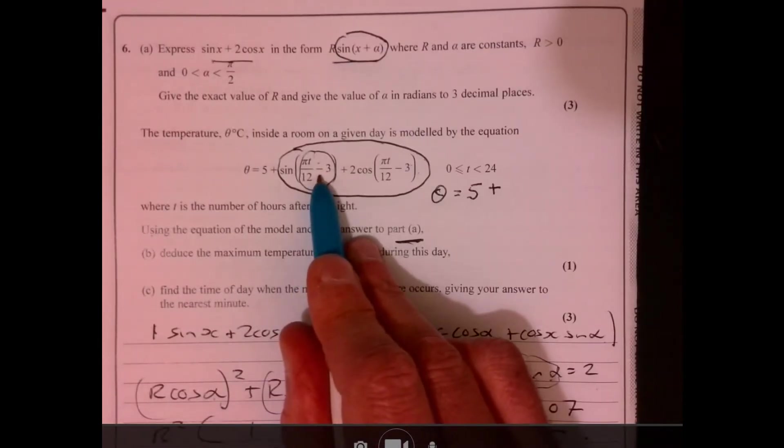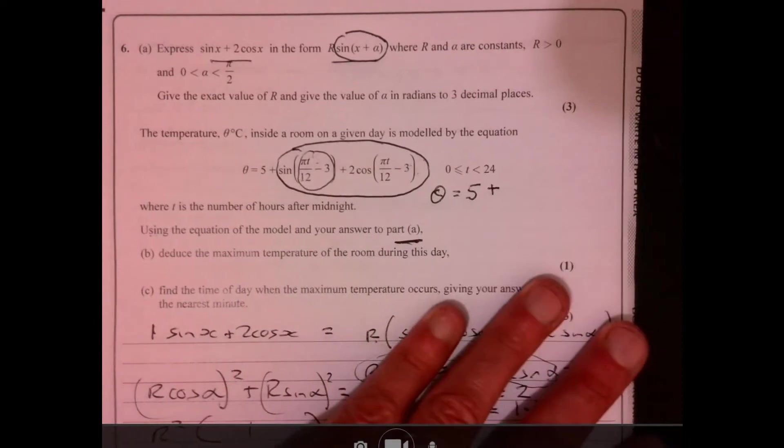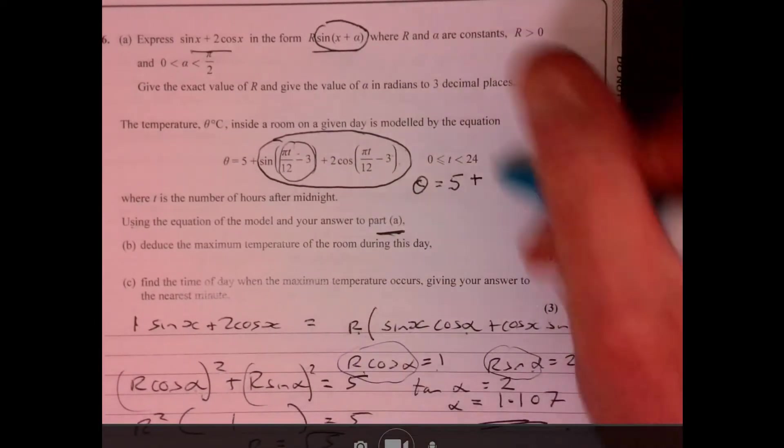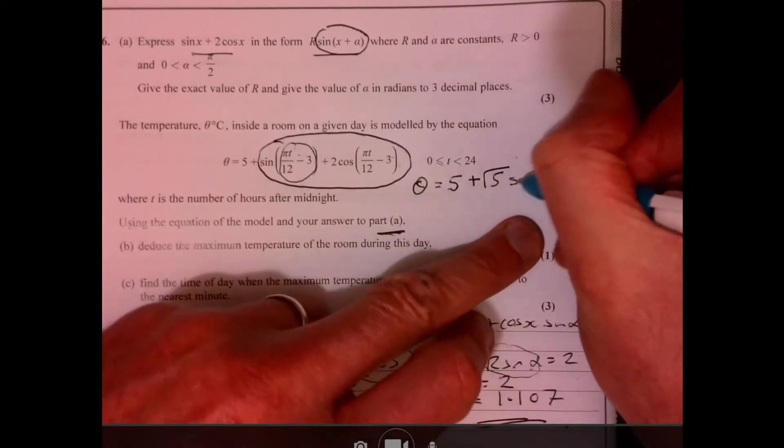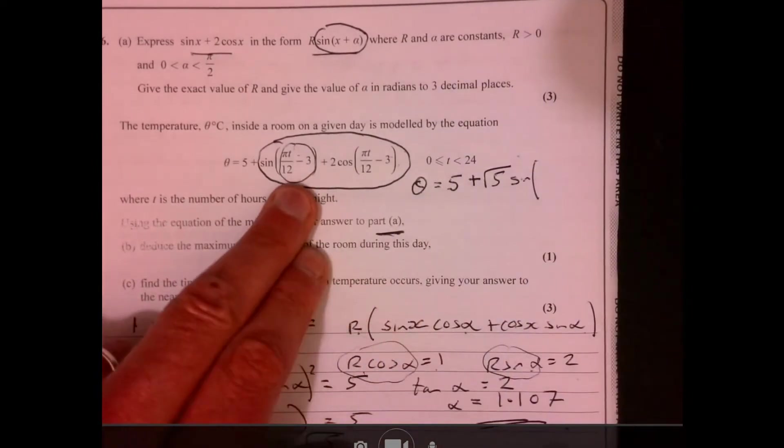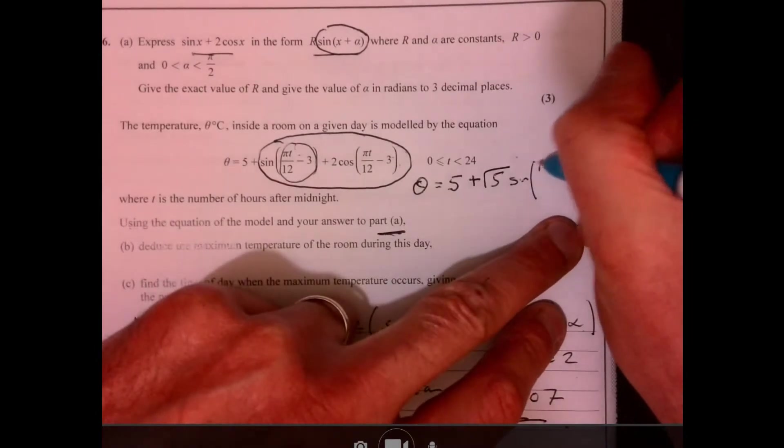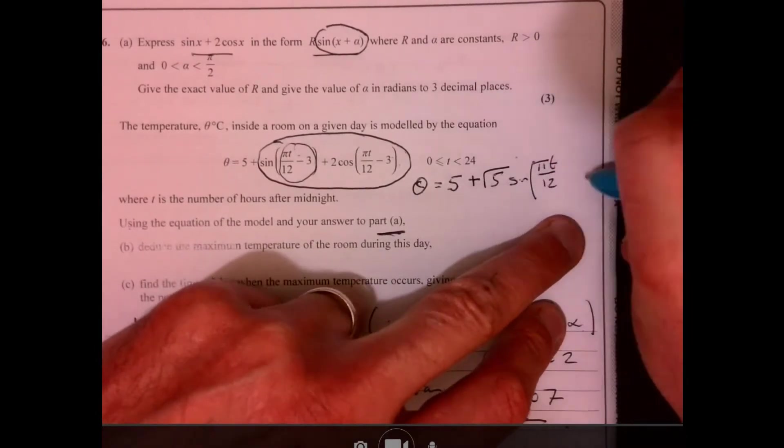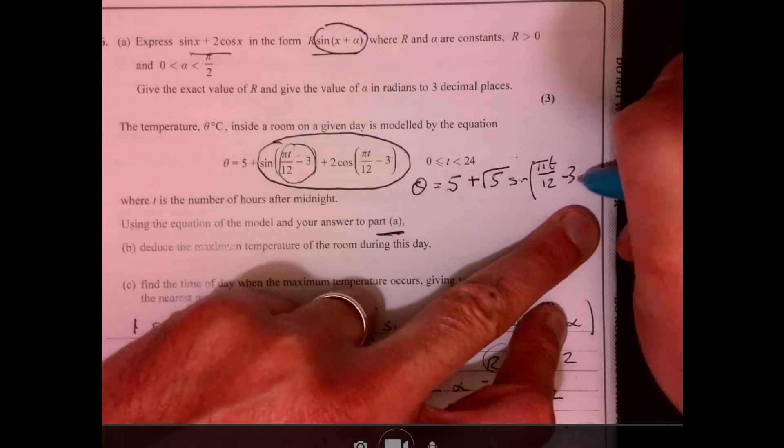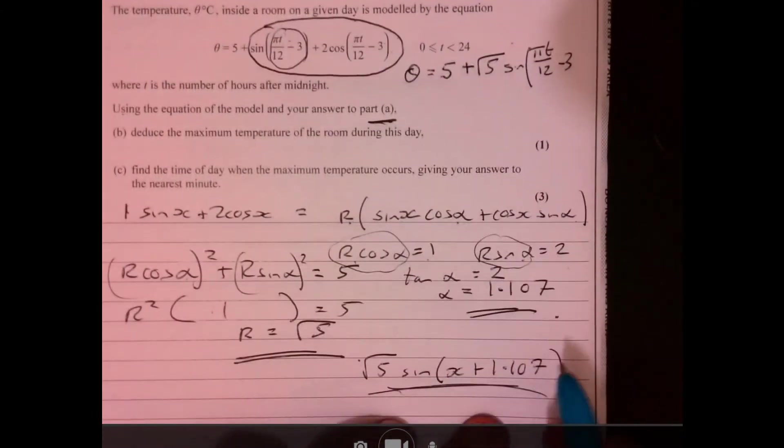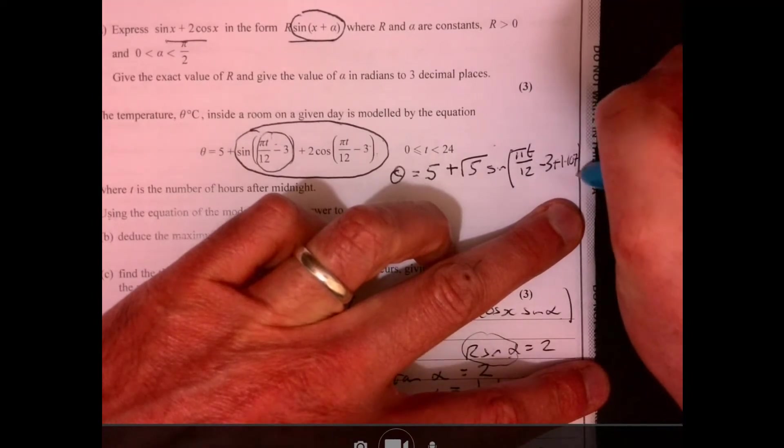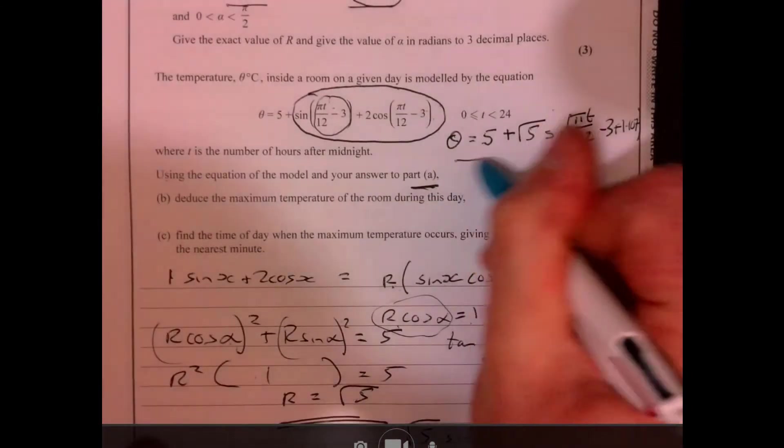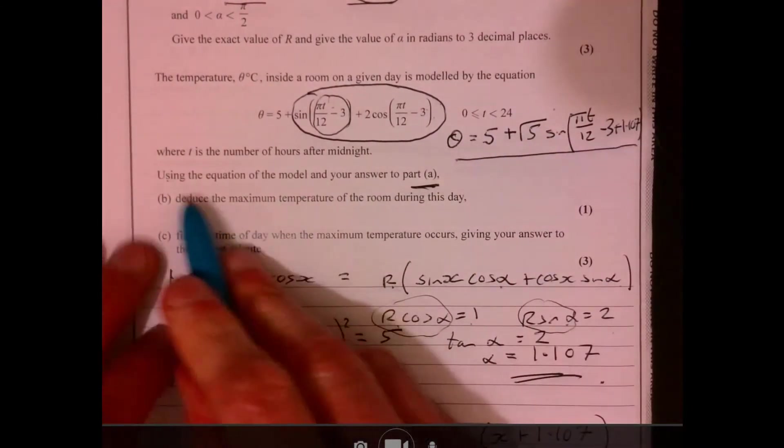We're going to write this down and pop in x as this value. So root five and then we've got sine, and then this is the x value. I know it looks a little bit yuck, but pi over t divided by 12 minus three, that's the x value, and then remember we've got to add in that 1.107.